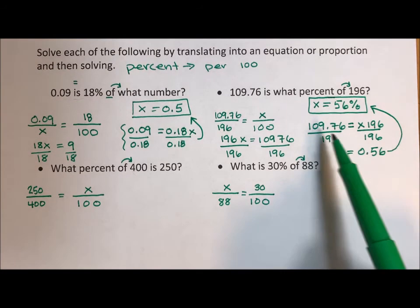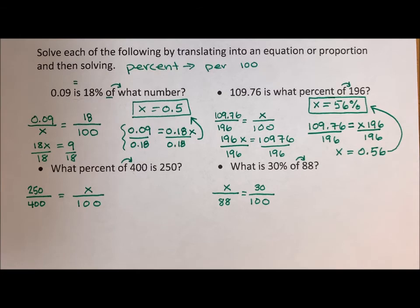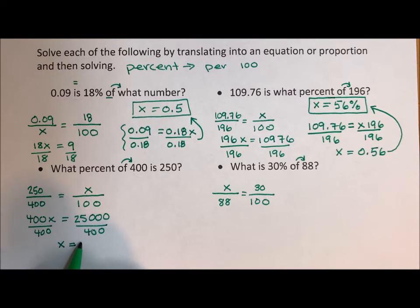But translating to the sentence, to the mathematical sentence, is faster. It's just a quick translation. Cross-multiply. 400X equals 250 times 100 is 25,000. Divide both sides by 400. And X is equal to 62.5%.